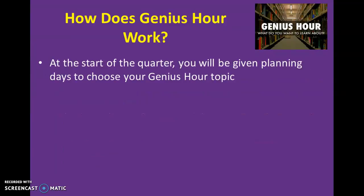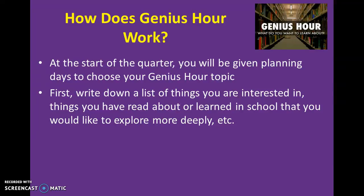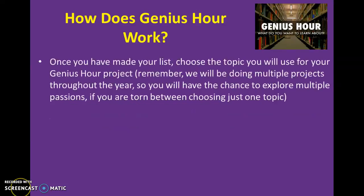At the start of the quarter we'll have some planning days for you to choose your Genius Hour topic — just brainstorming, getting ideas on paper. Write down a list of things you're interested in, things you've read about or learned that you'd like to explore more deeply. Look over your list and choose the topic you want for your project. Assuming this goes well, we'll be doing more Genius Hour projects throughout the year — one per quarter.